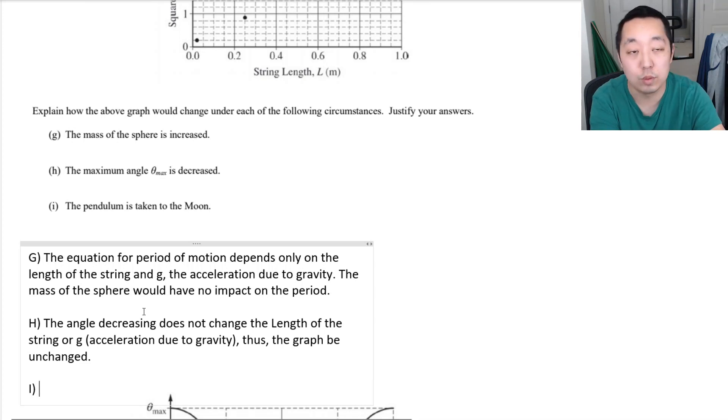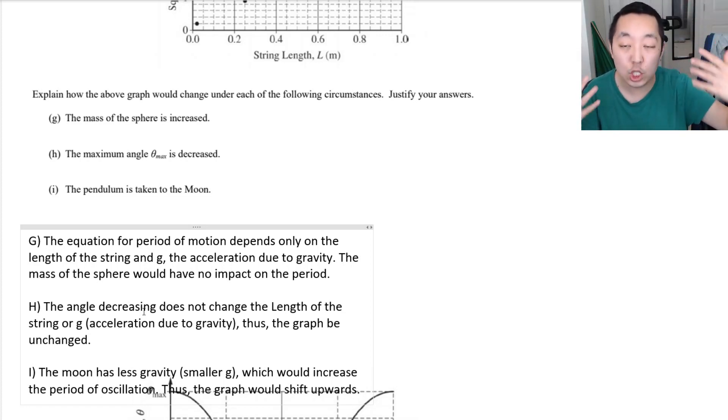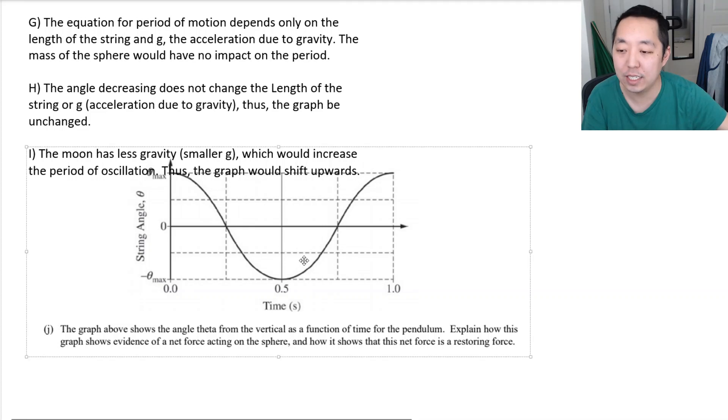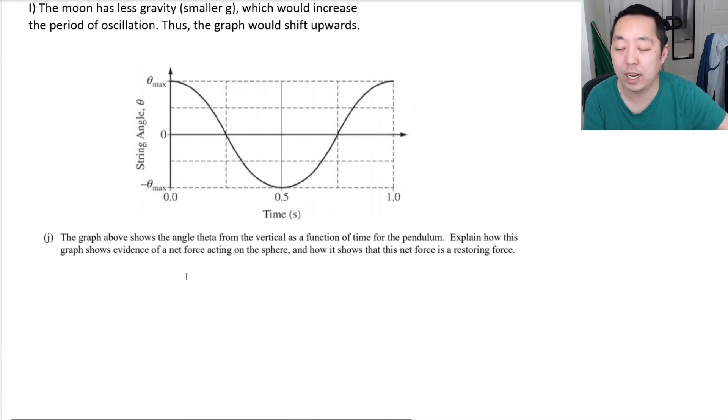And the pendulum is taken to the moon. This is going to change the graph. What is it going to do? The moon has less gravity. Has smaller G. Which would increase the period of oscillation. Thus, the graph would shift upwards. The numbers would go up. The period would increase as G is decreasing there. So you don't have to write the equation explicitly. I kind of just hinted at it with a bunch of words. If you just wanted to type it out. Because I thought it'd be nice to give you an example of how to type out an answer like this. Which is what they're kind of gearing you towards, trying to make it easier for you.